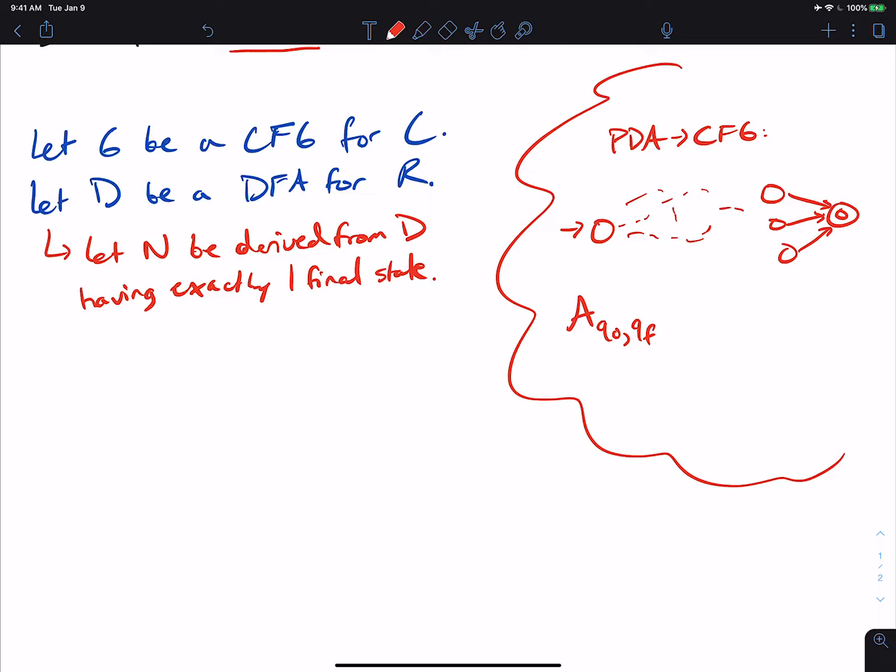Well, in general, the DFA for R here may or may not have a single final state or not. So let's let N be derived from D having exactly one final state. So that'll mirror the same idea as before.